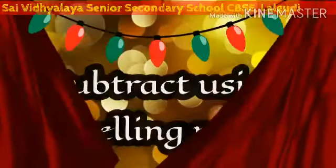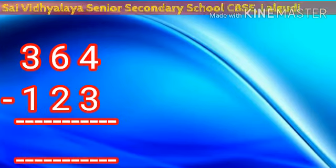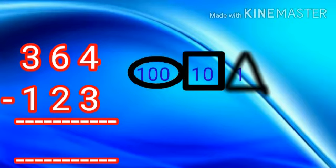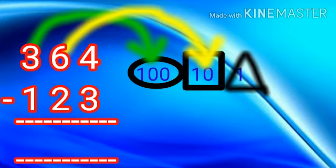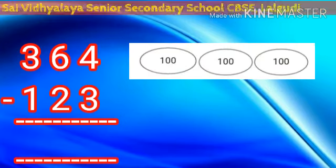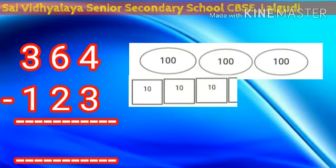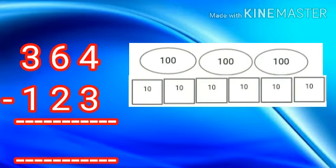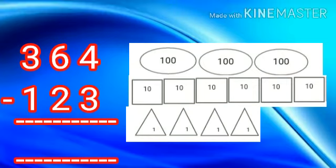Subtract using the cancelling method: subtract 123 from 364, that is 364 minus 123. Now let's represent them in cards — that is three hundred cards, six ten cards, and four one cards. Shall we draw the cards? One, two, three — three hundred cards. One, two, three, four, five, six — six ten cards. One, two, three, four — four one cards.